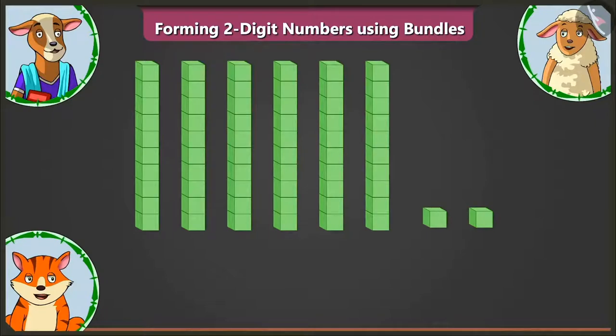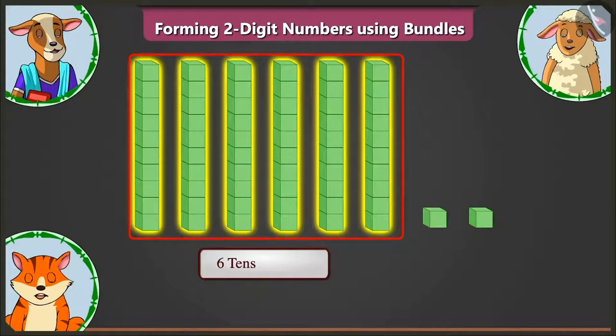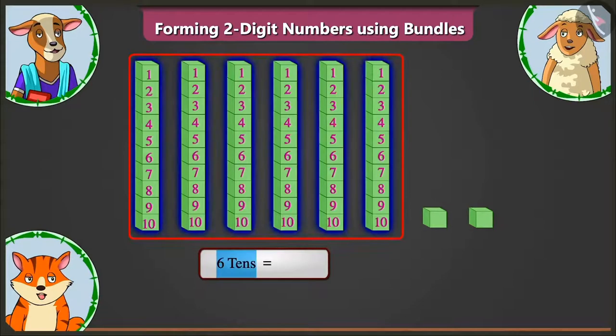Similarly, there are one, two, three, four, five and six groups of ten blocks each. So, six tens makes sixty.